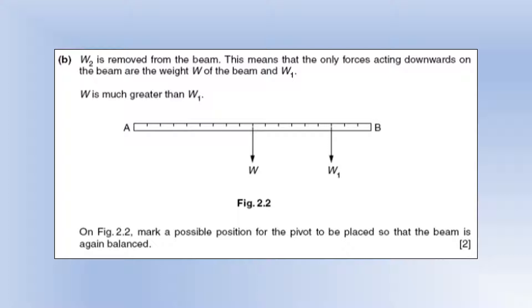So we've now got rid of W2. This means only forces acting are the weight of the beam and also W1. W is much greater than W1. Mark a possible position for the pivot to be placed so the beam is balanced.